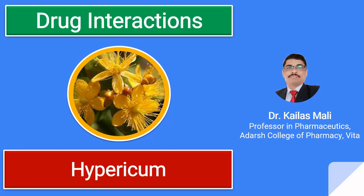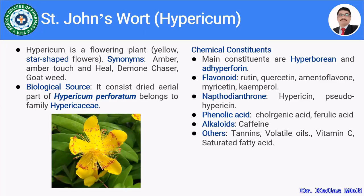In today's session, we are going to discuss one of the drugs — Hypericum, also known as St. John's Wort. St. John's Wort is a flowering plant. If you can see the flowers, they are yellow in color and star-shaped. You can see from the image that the plant consists of star-shaped yellow flowers. We generally use the aerial parts for medicinal purposes.